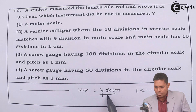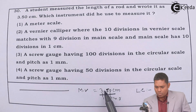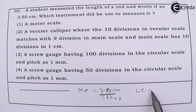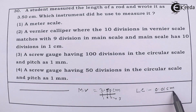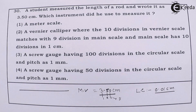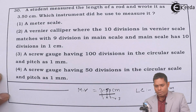The total number of significant figures is 1, 2, 3 — the total is 3. So it is accurate up to 0.01, meaning the least count is 0.01 cm. So we have to see which option gives 0.01 cm, and we will check one by one.